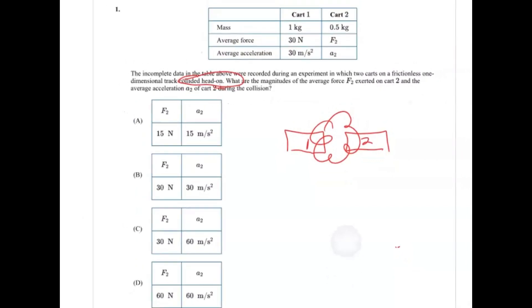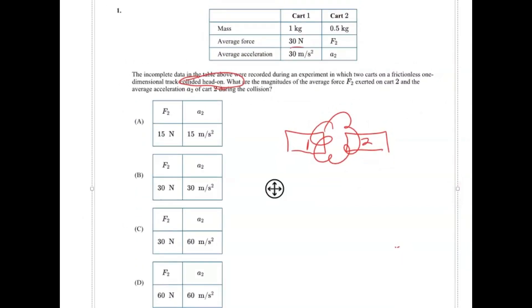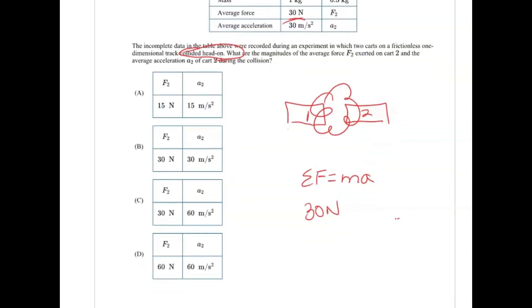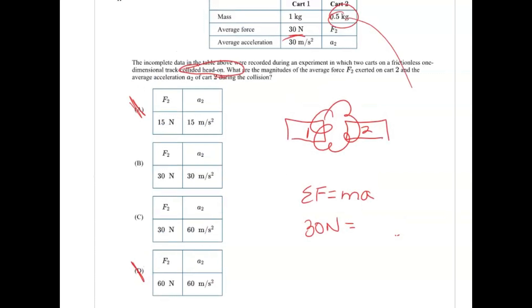And so because of this, we're given the average force experienced by cart 1, which is 30 newtons. And so for sum of all the forces equals ma, which we can use to find the acceleration. So we know the average force already is going to be 30 newtons. So we can eliminate all the choices without 30 newtons. So it's either B or C. And then we just plug in the mass, which is given here, 0.5 kilograms for cart 2, and solve for a, our acceleration, which would be 60 meters per second squared. So the answer is choice C.